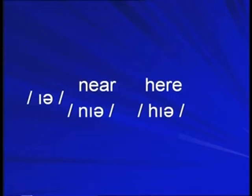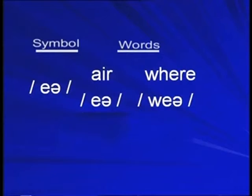The next vowel sound number 18 is not difficult to produce. We find it in words like near and here. Say the words after me: Near. Here. Right. The next vowel sound number 19 is found in words like air and where. We don't find any difficulty in saying this sound. I can say the words: Here. Where. Share. Right.